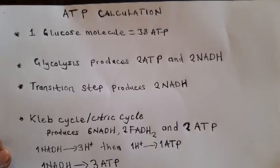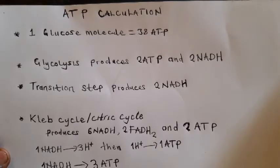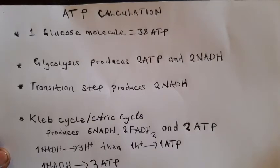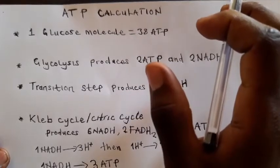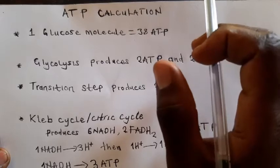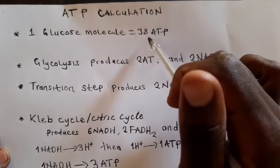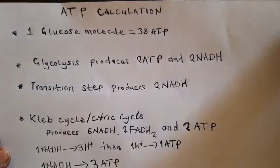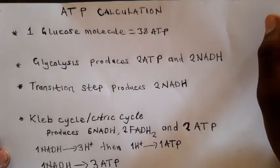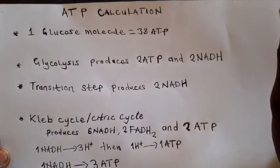In this lecture we are going to consider how the ATP is calculated from one molecule of glucose — how we can calculate the amount of ATP produced. One molecule of glucose can produce about 38 ATP.